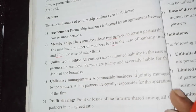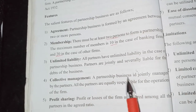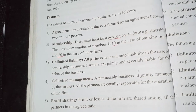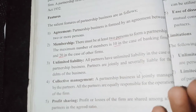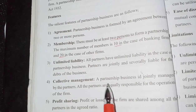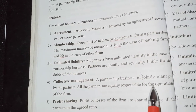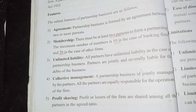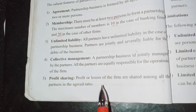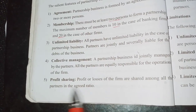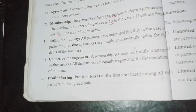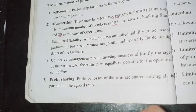The partnership business is jointly managed by the partners, who are jointly responsible for the operations of the firm. Profit share: profit or loss of the firm is shared among all partners in the agreed ratio. Partners divide the profits according to their agreement.